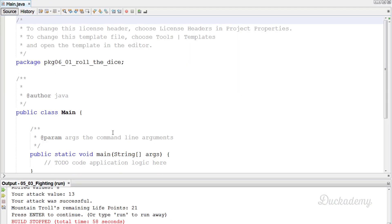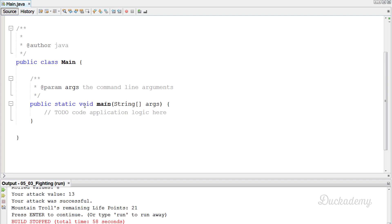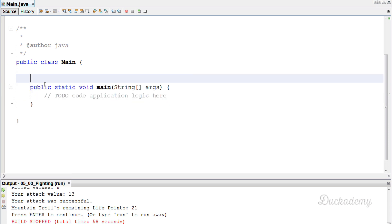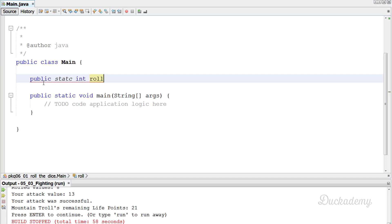And now we have this main function and we will create another function. So I first remove this comment part and this will be public static int role. For example, the return type is int and it requires no parameters.